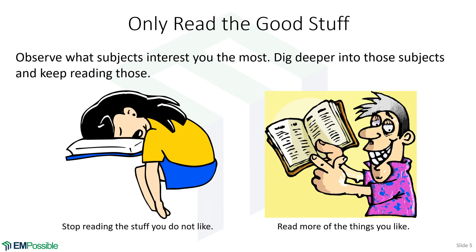As you read, only read the good stuff. If you're bored by a subject, put it aside. You don't want your PhD or master's level research to be something that bores you. Give it a good chance — don't just pick up one resource, feel bored, and give up. Give it a few; some papers are just more exciting or boring than others. But if you are genuinely bored by a topic, put it aside and stop reading. Keep reading the things you like and start digging deeper into those.